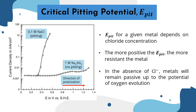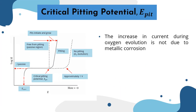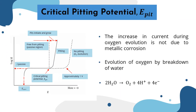In the absence of chloride ions, metals will remain passive up to the potential of oxygen evolution. The increase in current during oxygen evolution is not due to metallic corrosion, but rather is due to the evolution of oxygen by the breakdown of water in the electrolyte.